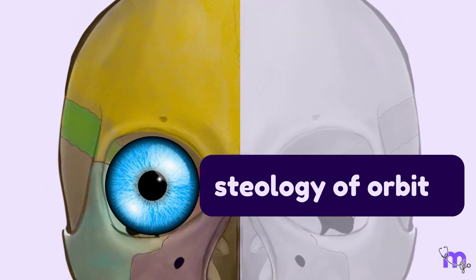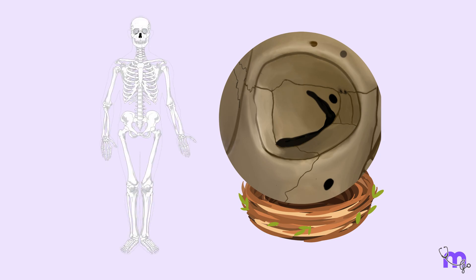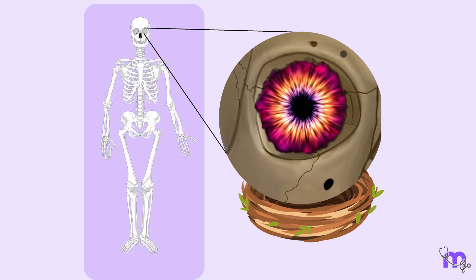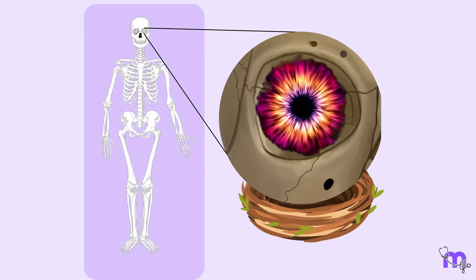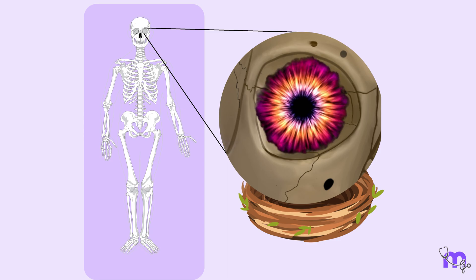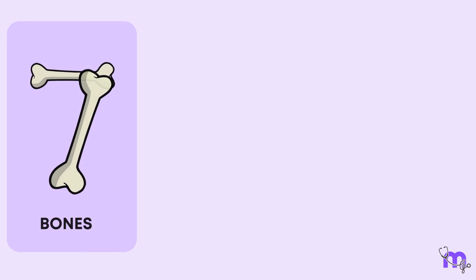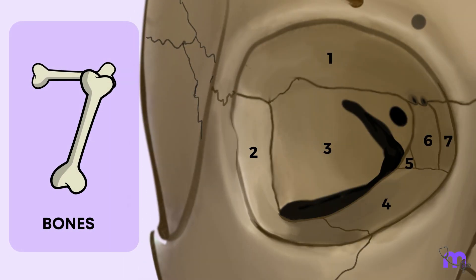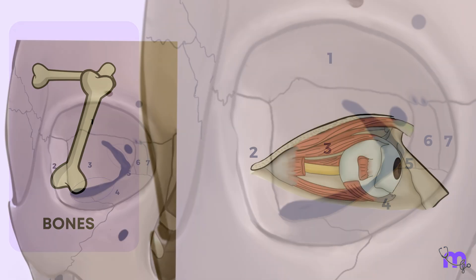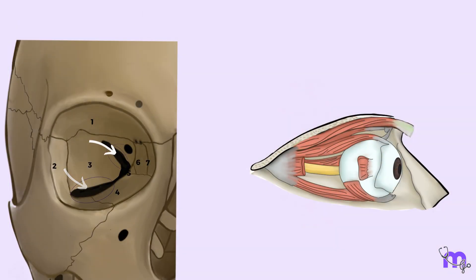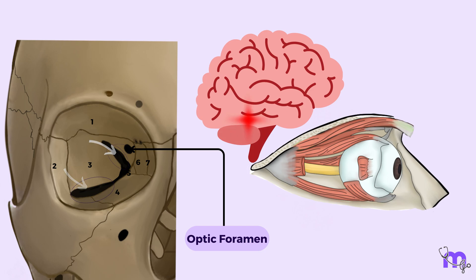Osteology of the Orbit. The orbit is a skeletal structure nestled within the skull. It serves as a protective sanctuary for the eye and associated tissues. Comprising seven bones, this cavity exhibits a complex arrangement. Within the orbit, the bones showcase a network of foramina and fissures, serving as gateways for vital neurovascular structures on their journey from the brain to the eye and face, and vice versa.